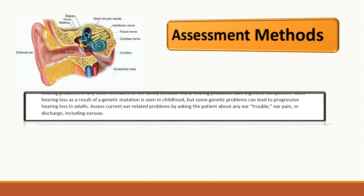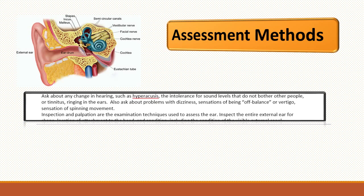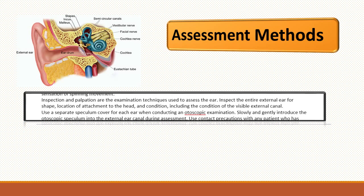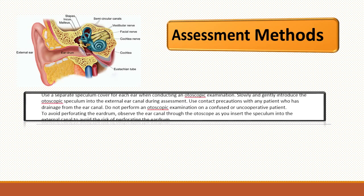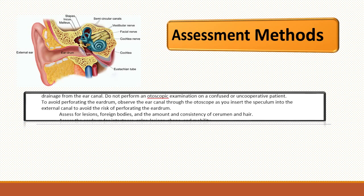You want to assess any ear-related problems. Ask patients about any changes in hearing, any intolerance to sound levels, ringing, dizziness, or any vertigo. You want to inspect, palpate, and examine the ear itself. Inspect the entire external ear, and use a separate speculum cover for each ear when conducting an otoscopic exam. When using the otoscope, slowly and gently introduce the speculum into the external ear canal. Do not hurt the patient. Use contact precautions if the patient has any drainage in the ear — make sure you have gloves on. Do not perform an otoscopic exam on a confused or uncooperative patient, and avoid perforating the eardrum with the otoscope.